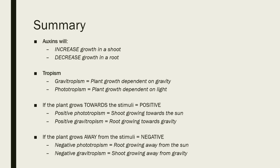To summarize everything: auxins will increase growth in a shoot but decrease growth in a root. Gravitropism is plant growth dependent on gravity, and phototropism is plant growth in response to light. If the plant grows towards the stimuli — whether gravity or light — that is positive. So positive phototropism is when the shoot grows towards the sun, and positive gravitropism is when the root grows towards gravity. If the plant grows away from the stimuli, that is negative — negative phototropism is when the root grows away from the sun, and negative gravitropism is when shoots grow away from gravity.